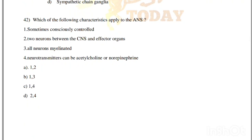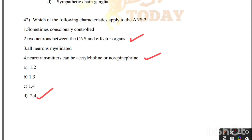Which of the following characteristics apply to the ANS? Sometimes consciously controlled; two neurons between the CNS and effector organs; all neurons myelinated; neurotransmitters can be acetylcholine or norepinephrine. Correct answer is option D — 2 and 4: two neurons between CNS and effector organs, and neurotransmitters can be acetylcholine or norepinephrine.